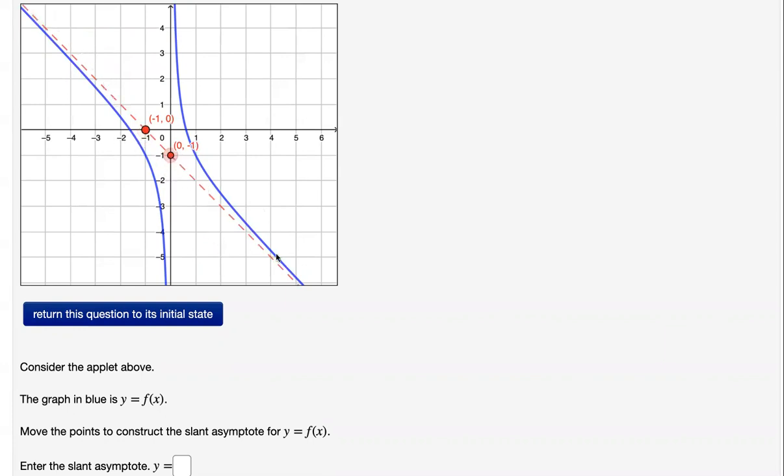Slant asymptote here. Curve getting closer and closer to it as x approaches infinity. Curve getting closer and closer to the slant asymptote as x approaches negative infinity.